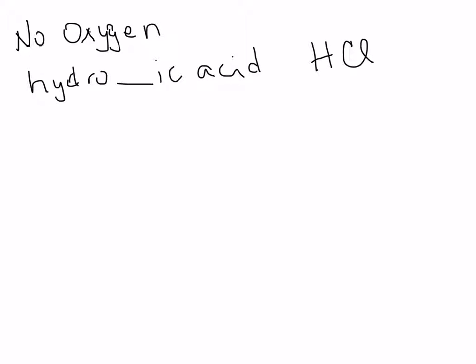So let's just summarize. So if we have no oxygen, so non-oxy acids, you get hydro and then -ic acid. So HCl would be hydrochloric acid. So those are our ones without oxygen.